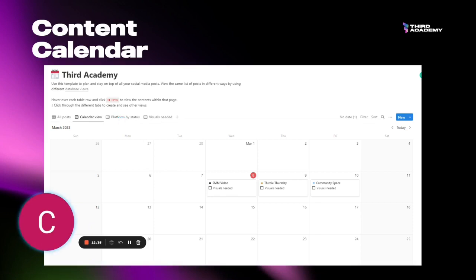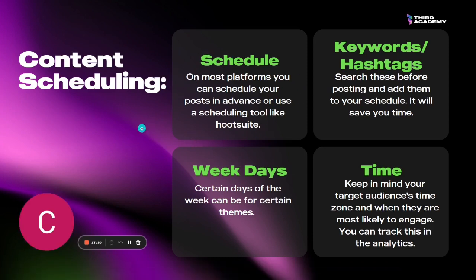This is a mock content calendar on Notion — Notion is free to use, so sign up for it, it's great for organization. They have a calendar where you can create your social media posts, expand them, write in what the content will be, and add your graphics. Everything can be scheduled in your content calendar, which makes life so much easier. For scheduling, on most platforms you can schedule posts in advance. You can use Facebook Business to schedule posts on Facebook and Instagram, or use tools like Hootsuite or other scheduling tools.